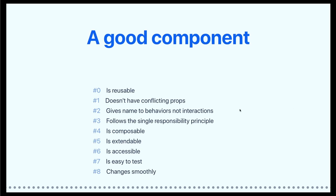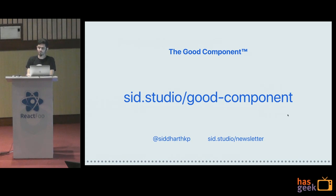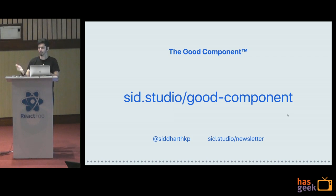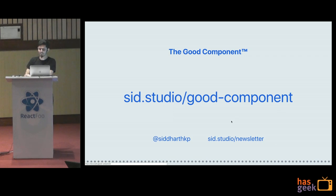So this is like the long list, which you can't really remember all of. I put it on a page at sit.studio/good-component where you can see the list. I wrote blog posts about most of them so you can explore the examples and read more. I send this stuff every Friday — everything you just learned except the accessibility part — on my newsletter. Maybe some people have already read it, sorry for the redundancy. I send React stuff every Friday. That's all I have.